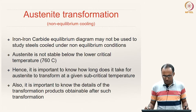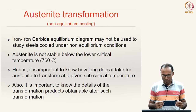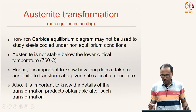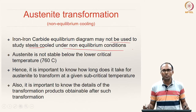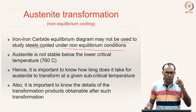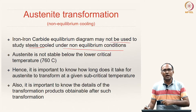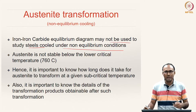The iron-iron carbide equilibrium diagram cannot be used to study steels that are cooled under non-equilibrium conditions, because the iron-carbon equilibrium diagram is applicable only under equilibrium conditions. So if you are cooling at a faster rate, you cannot directly use the iron-carbon equilibrium diagram in order to understand the microstructures.